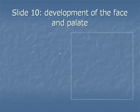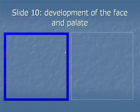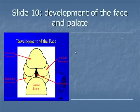Slide 10: the development of the face and palate. Item 1: the recognizable face begins its development from five primordia that surround a central area of depression, the oral pit or the stomatodeum. These primordia are the single cranially located frontonasal process and two bilaterally located maxillary processes and mandibular processes.